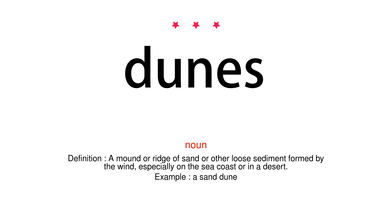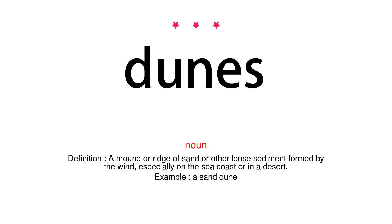Dunes. Noun. Definition: A mound or ridge of sand or other loose sediment formed by the wind, especially on the sea coast or in a desert. Example: a sand dune.